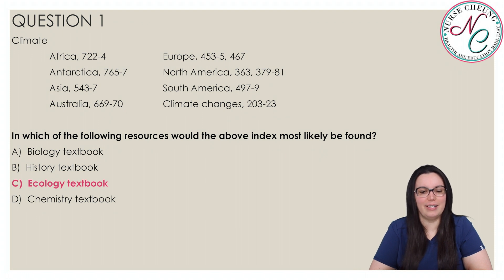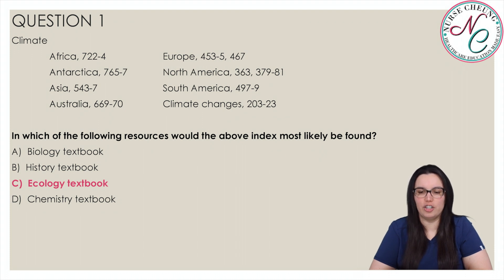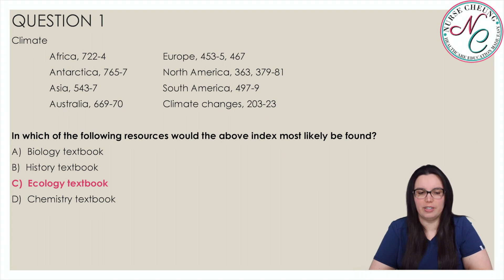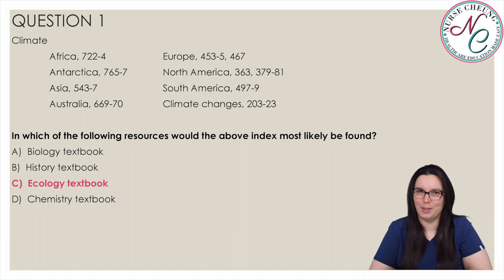Climate is a subtopic of ecology disciplines. Biology textbooks are more concerned with life processes, while history textbooks are more concerned with social and political events in the past. Chemistry textbooks are usually concerned with chemical processes, so choices A, B, and D would be incorrect.